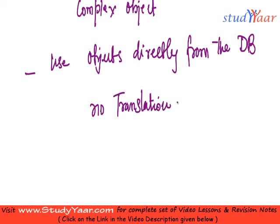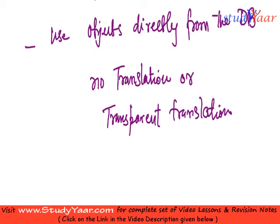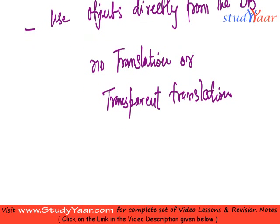No translations, or transparent translations. Transparent translation means that the user is totally unaware of the translation taking place. The object being used in a programming language is converted into something which can be stored in a database, done in a totally transparent manner. Such object-oriented databases allow permanently storing an object which can be used by object-oriented programming languages.